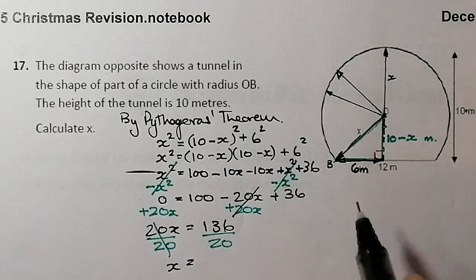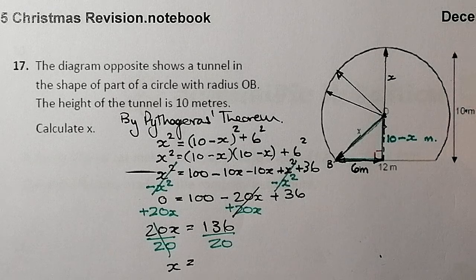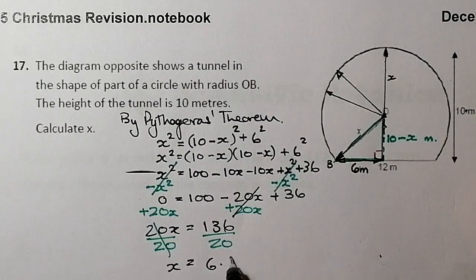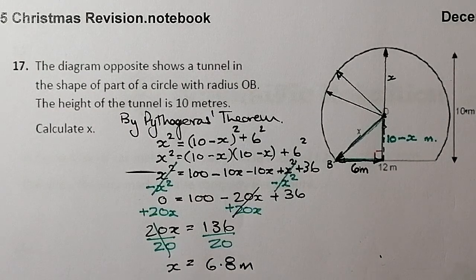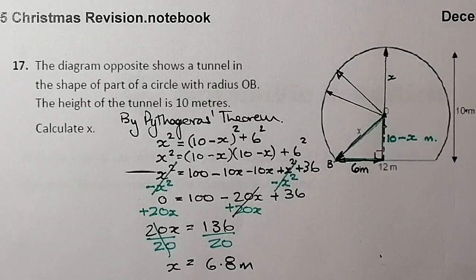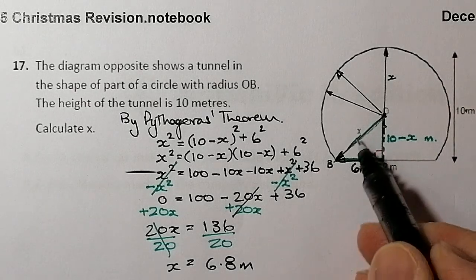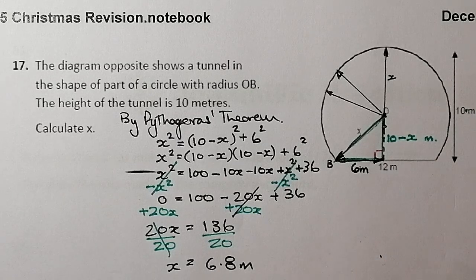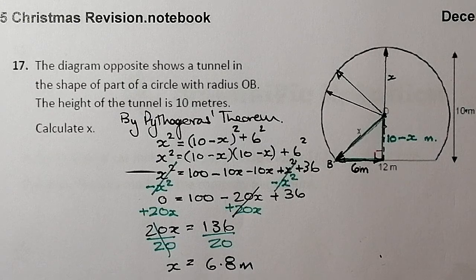So x = 136 ÷ 20. Dividing by 10 first gives 13.6, then halving gives 6.8. So x = 6.8 meters — that's the radius. I could substitute that back into Pythagoras to double-check: 6.8² minus 6² should equal (10 − x)², but that's all I've been asked to do in this question, so that's where I'll stop.